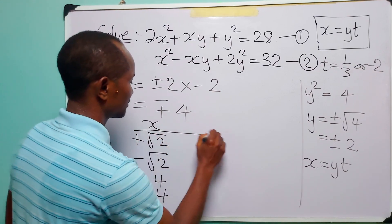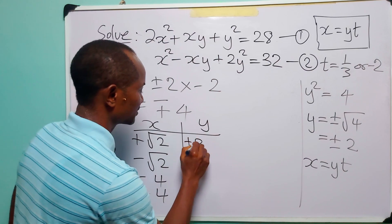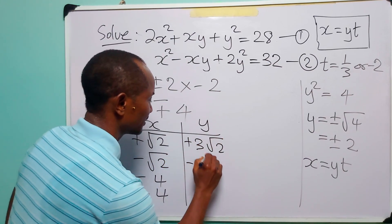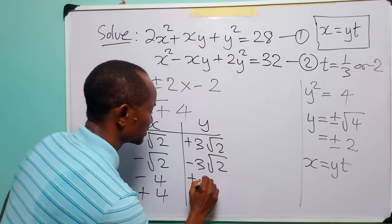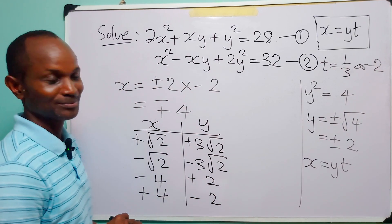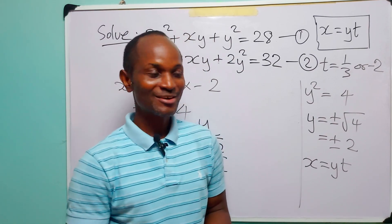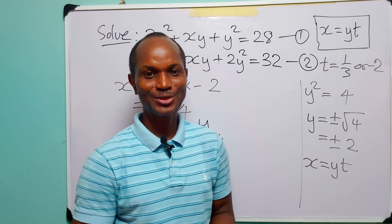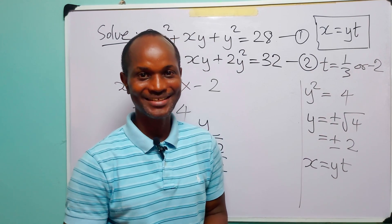So the values of x and y that satisfy these two equations simultaneously are: x = +√2, -√2, -4, +4 and y = +3√2, -3√2, +2, -2. And with that we come to the end of today's exercise. Remember to subscribe if you enjoy such content, leave us a thumbs up to support the channel. Thank you very much for watching and see you in the next one.